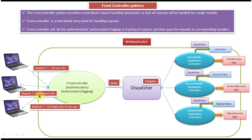Now suppose request 2 comes in to get account information from the system. It comes to the Front Controller, which performs authentication, authorization, and logging. If everything is fine, it uses the Dispatcher to delegate the request to the Account Handler. The Account Handler talks to the Account Business Logic, which calls the DAO layer to get the account information from the database. The data is passed back to the Account Handler, which dispatches it to the Account View, and the Account View displays the account information in the browser.